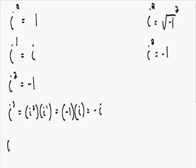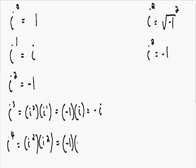Now let's say we have i to the fourth power. i to the fourth equals i squared multiplied by i squared, since 2 plus 2 equals 4. We know i squared equals negative 1, so we replace each i squared with negative 1. Negative 1 times negative 1 equals positive 1. Some of you might already see the pattern: every fourth power of i, the pattern repeats itself.